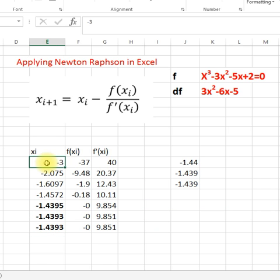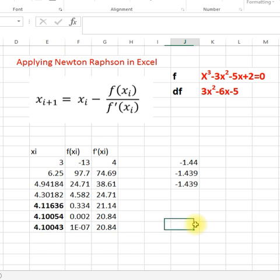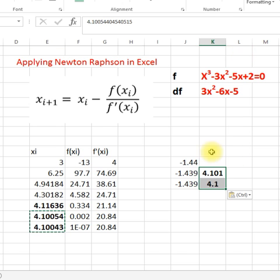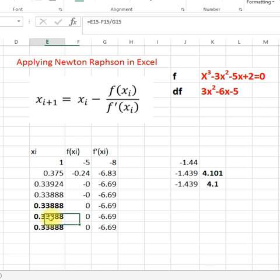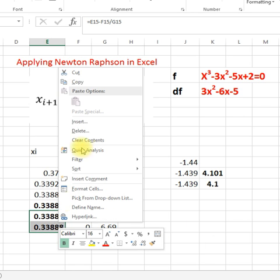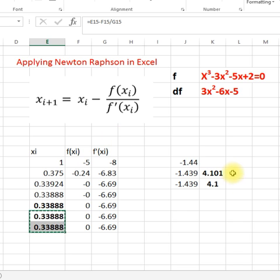I will change the guess value to 3, suppose. Yeah, the second answer is this root. And if I make it guess value 1, it is converging to 0.339. So this way I got all the roots which are this one.